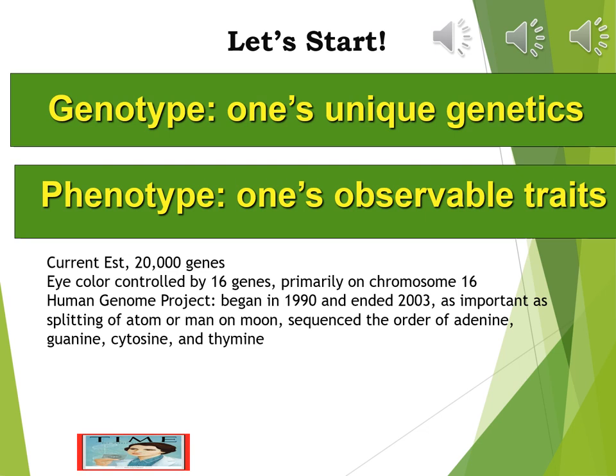If you're interested in eye color, we now believe it's controlled by 16 genes — discovered through the Human Genome Project. The majority of the input comes from one particular chromosome, chromosome number 15.